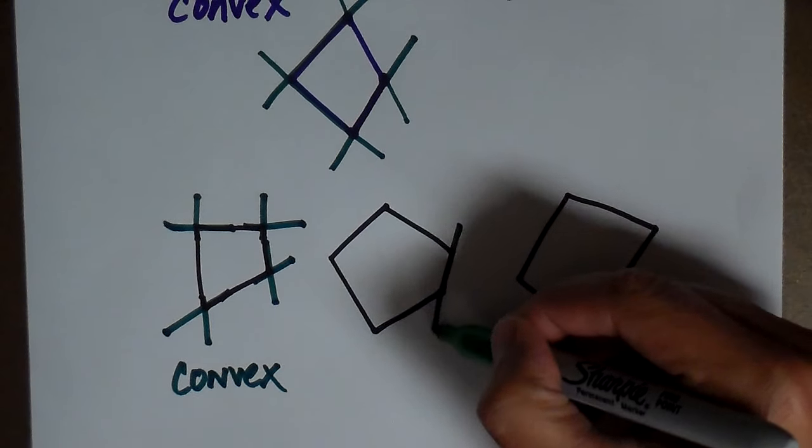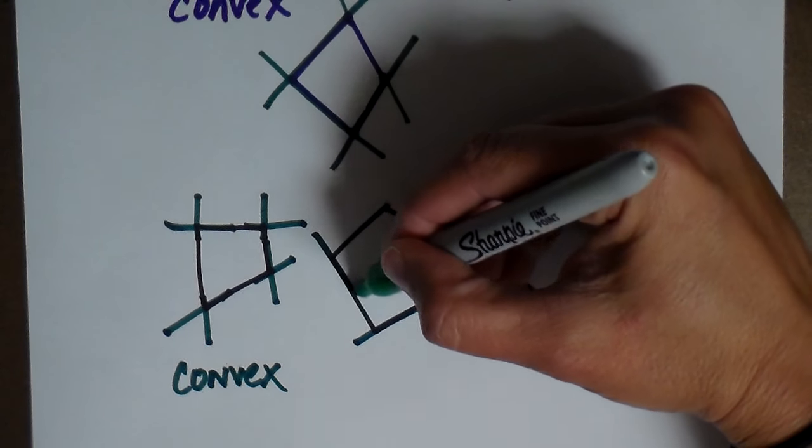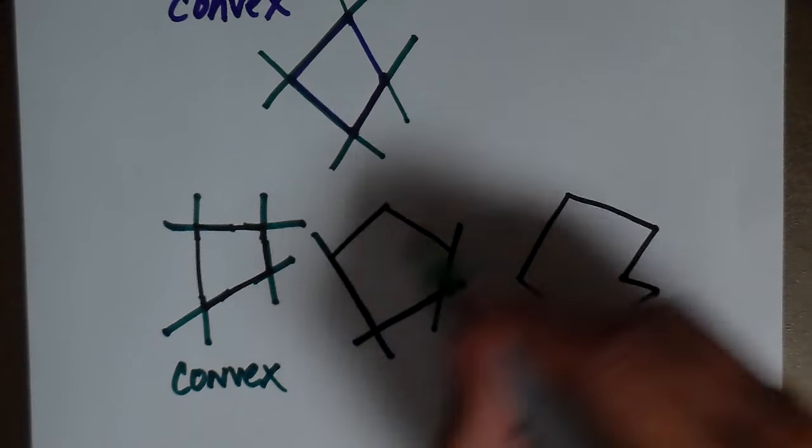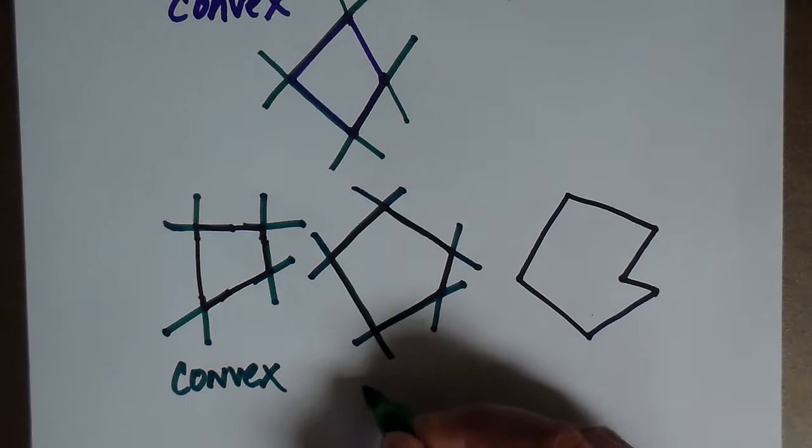So let's try this one. This side does not extend. Neither does this one. They're all on the outside. You see how when I extend these, they're all on the outside? None of them go into the interior of the polygon. So this would also be convex.